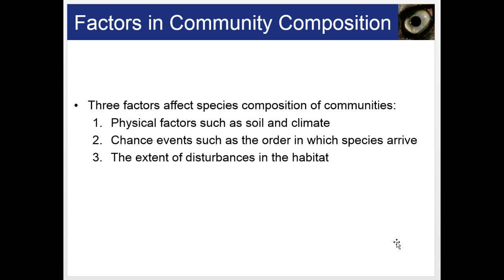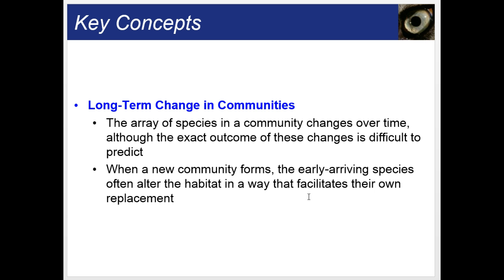Three factors affect species composition in communities: physical factors like soil and climate, chance events such as the order in which species arrived, and the extent of disturbances in that habitat. For long-term changing communities, the array of species changes over time, though the exact outcome is difficult to predict. When a new community forms, the early arriving species often alter the habitat in a way that facilitates their own replacement.